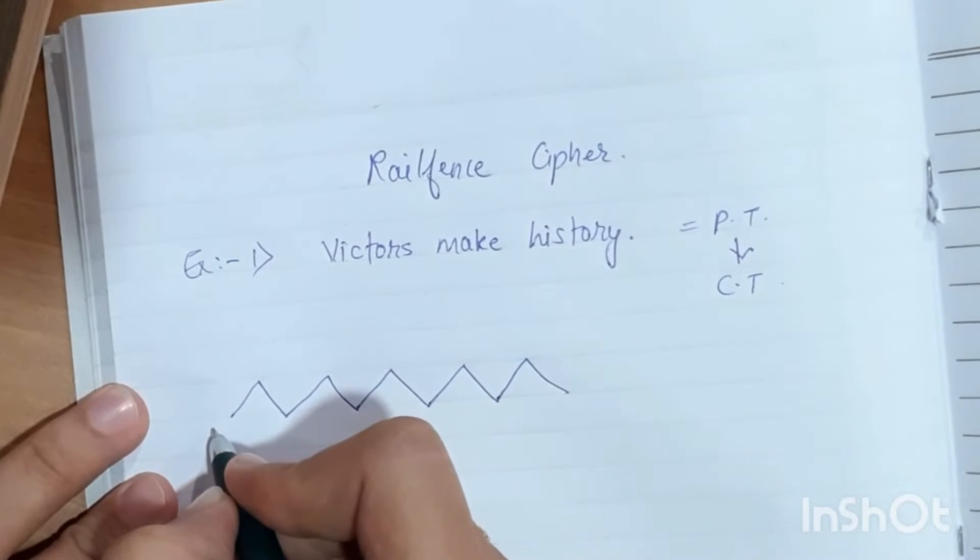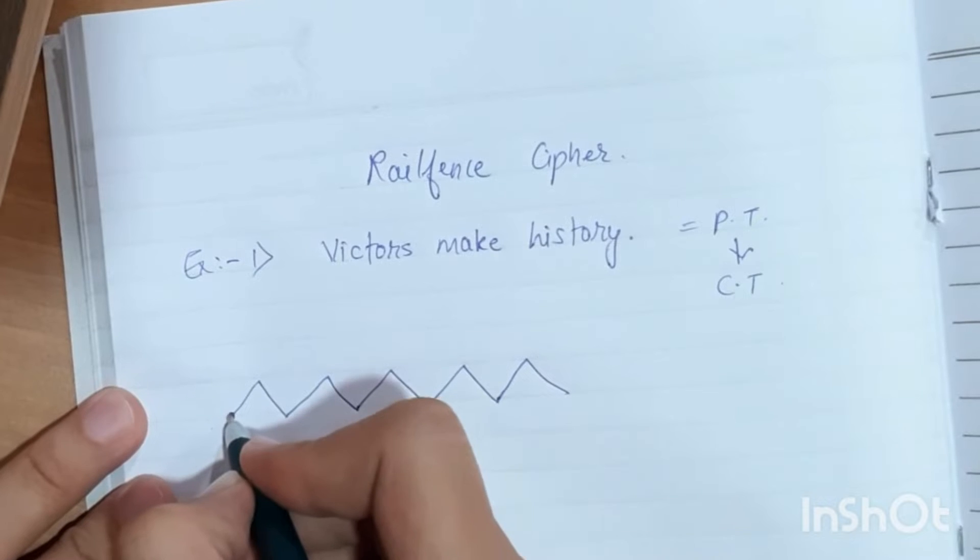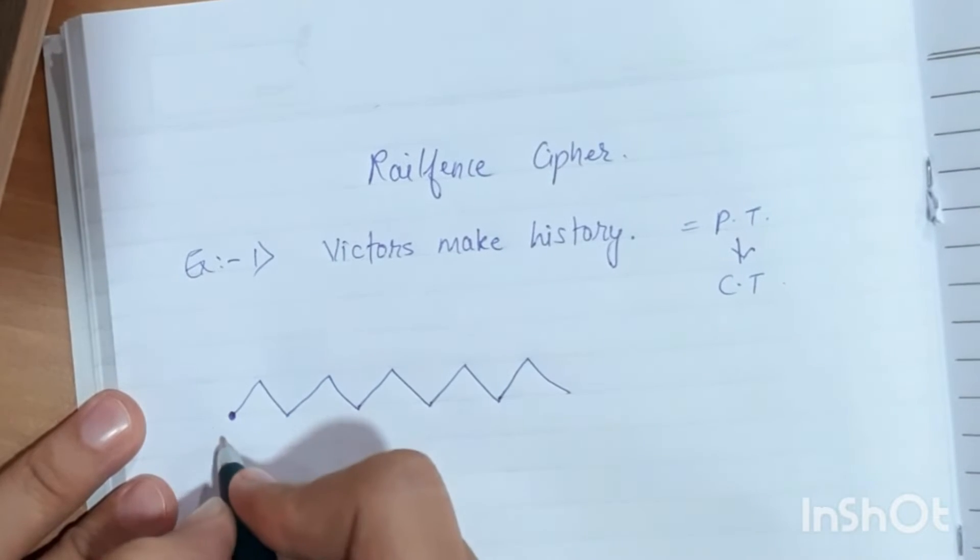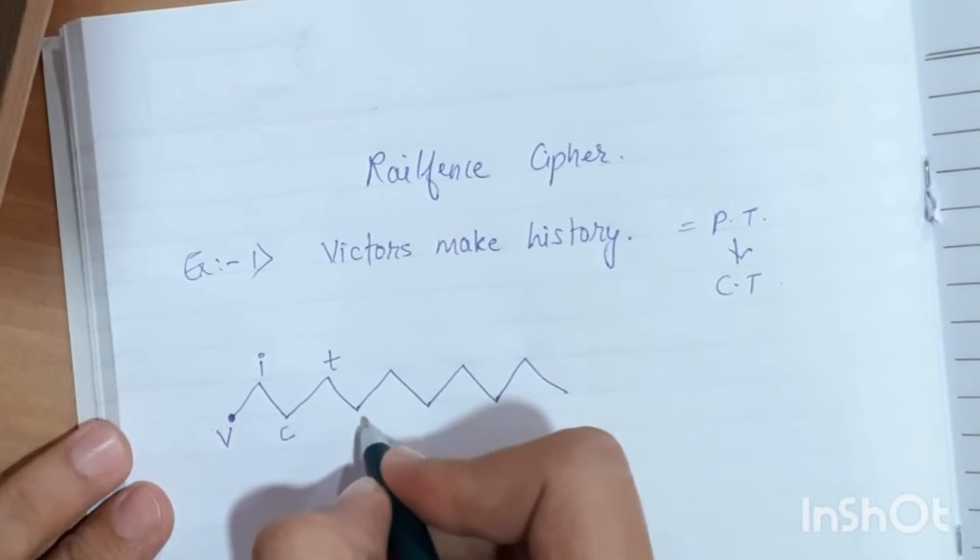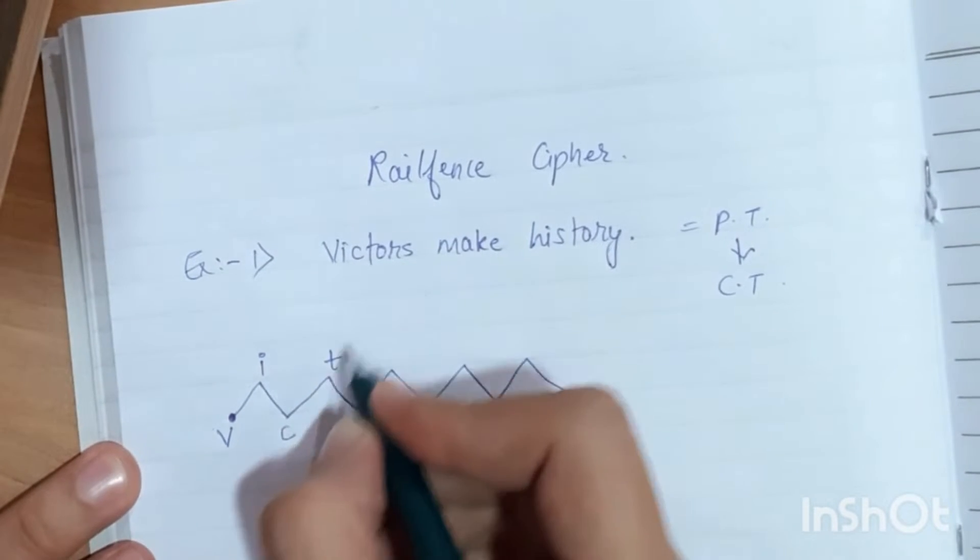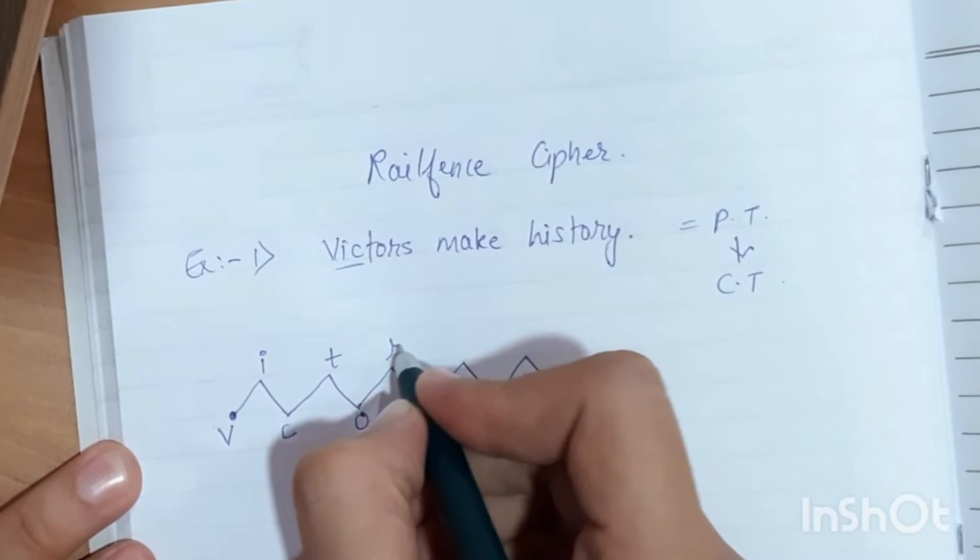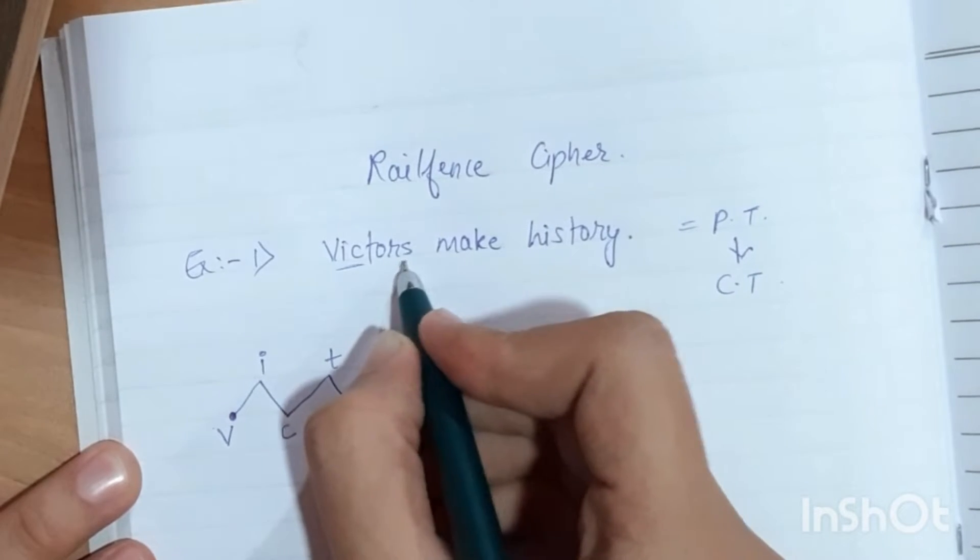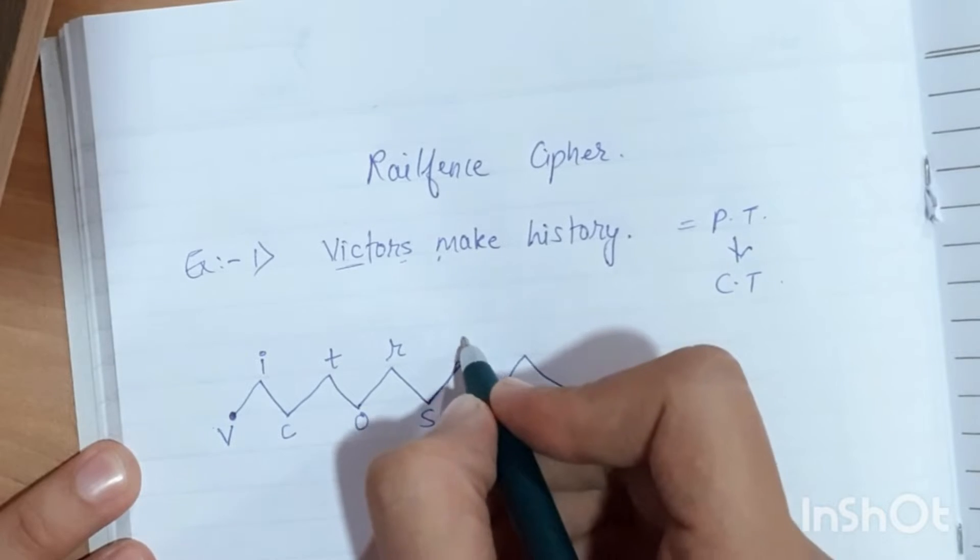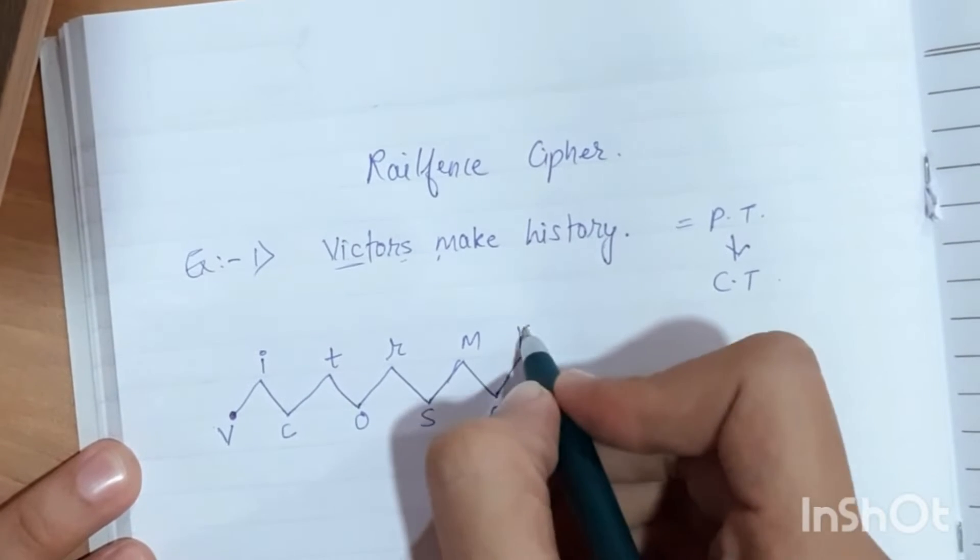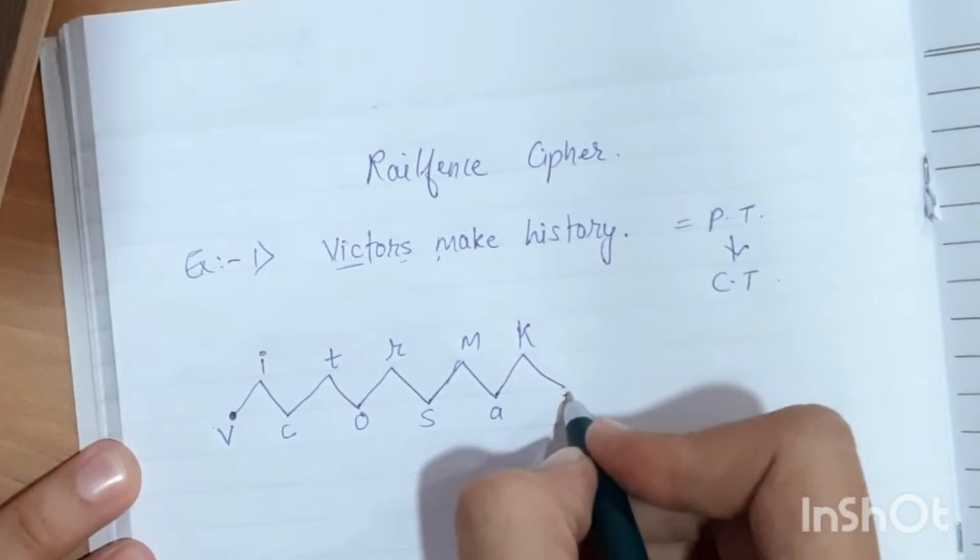First we will make a zigzag. Start to keep the alphabet from the bottom. First alphabet is V from Victors, then I, C, T, then O, R, S. After this word, we start the next word: M, A, K, and E.